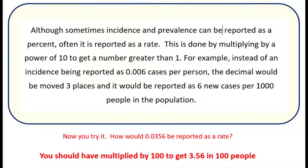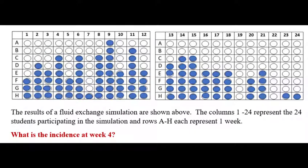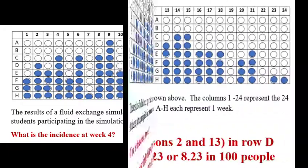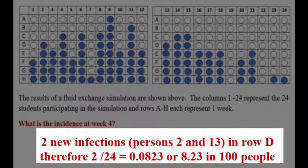Let's try these calculations using data from our simulation. What's the incidence for week 4? Week 4 is row D, so we're looking for new infections in that row. Is person 1 newly infected? No. Is person 2 newly infected? Yes. Go through the entire row. You should see two new infections, persons 2 and 13. Therefore, the calculation is 2 divided by 24, which equals 0.0823, or 8.23 people in 100 people.